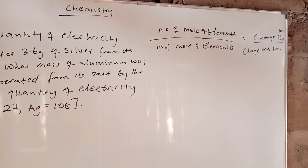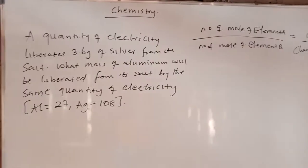In the second law of electrolysis, you have two elements. When they give you the mass of one element, you cross-multiply to get the moles of the other element, then multiply by the molar mass to get your answer. We are going to solve it properly so that you will see how it works.